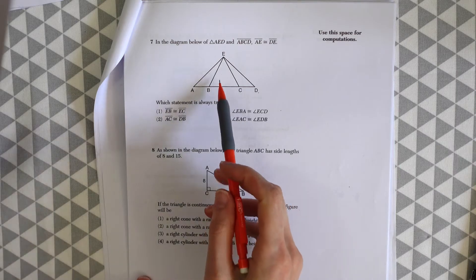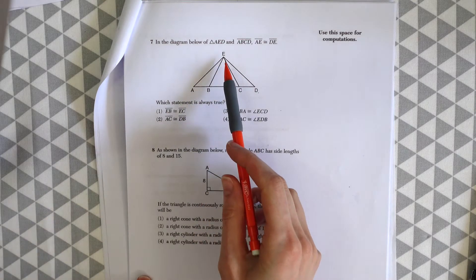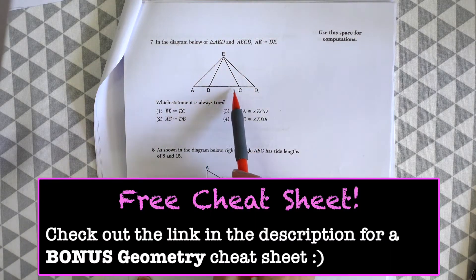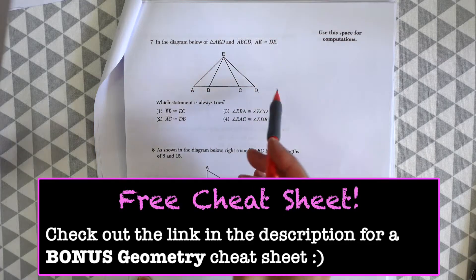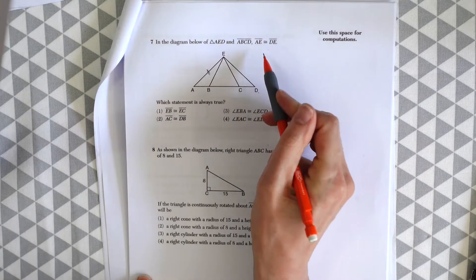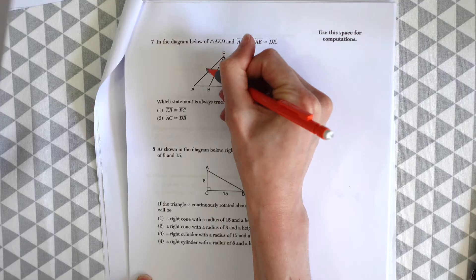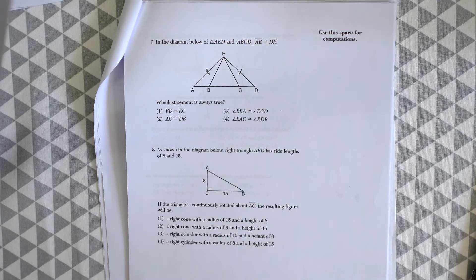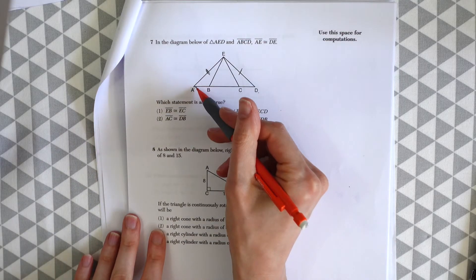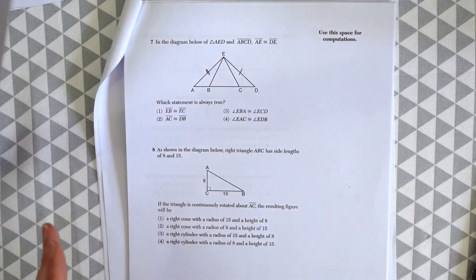In the diagram below of triangle AED and line ABCD, AE, so AE is right here, is congruent to DE. So we have AE here congruent to DE here. Based on that we know that this entire triangle, triangle AED, is an isosceles triangle.